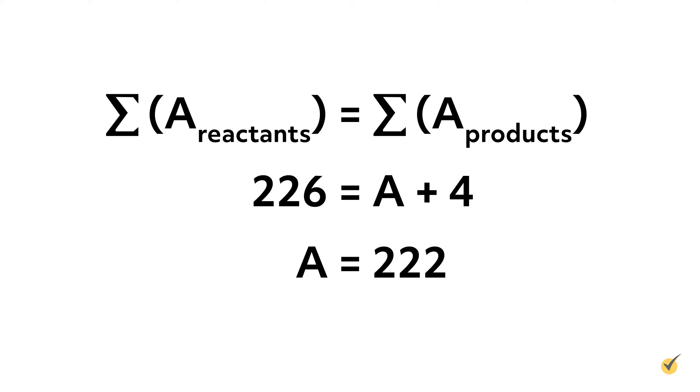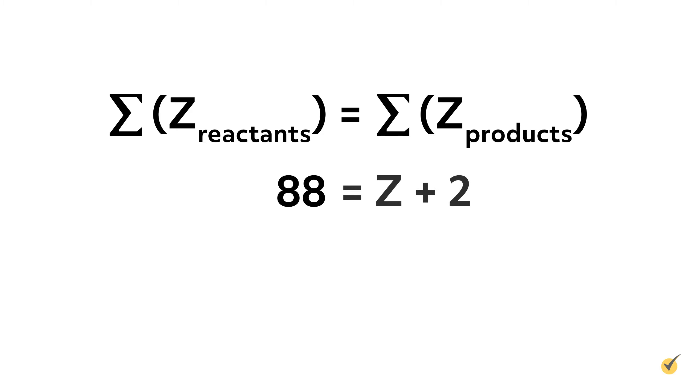We also need to set the sum of the atomic numbers of the reactants equal to the sum of the atomic numbers of the products. 88 equals Z plus 2, which means Z equals 86. Knowing Z is 86 reveals radium decayed by emitting a helium-4 nuclei and leaving behind a radon atom.